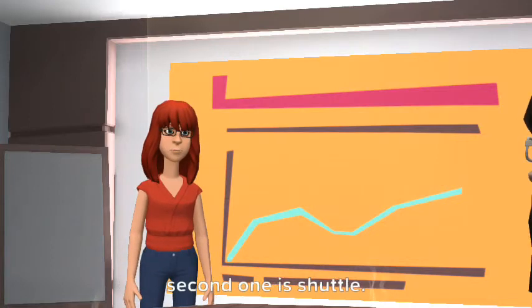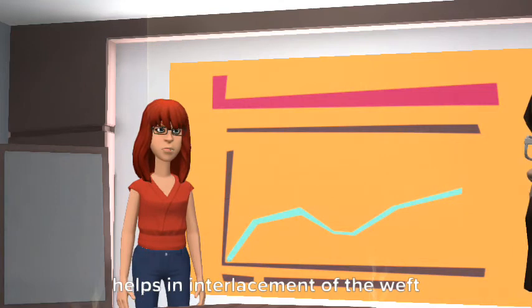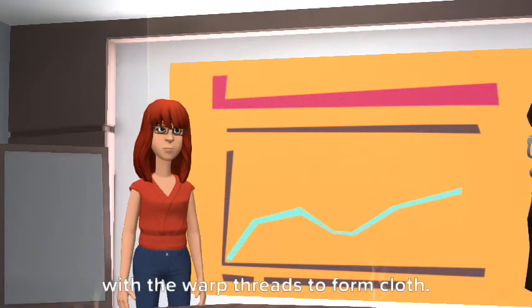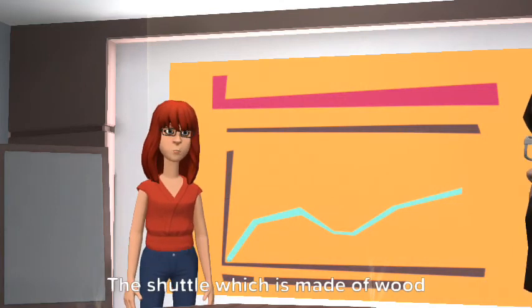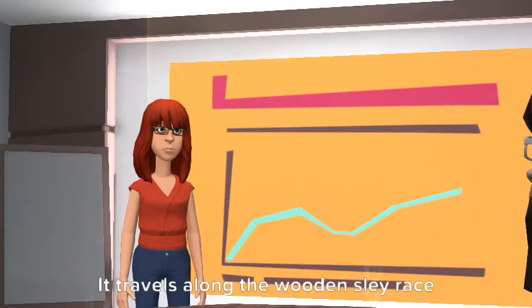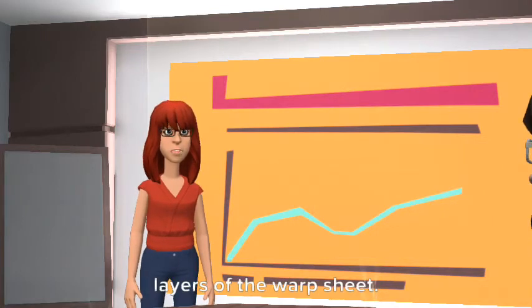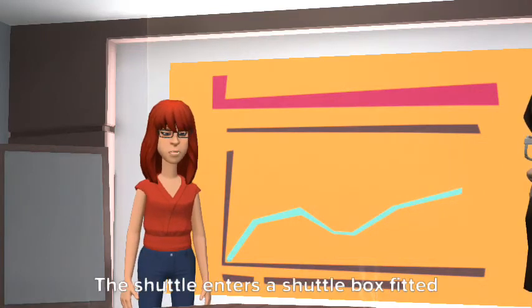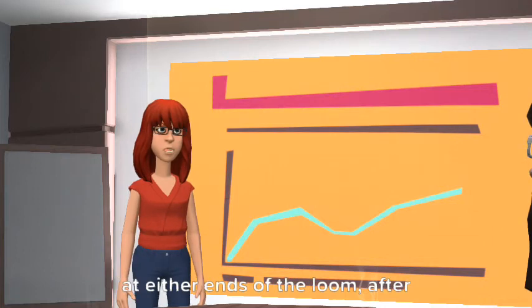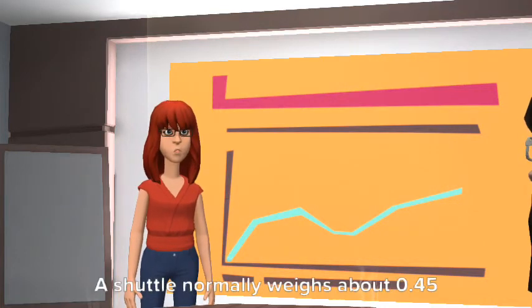Second one is shuttle. It is basically a weft carrier and helps in interlacement of the wefts with the warp threads to form cloth. The shuttle, which is made of wood, passes from one end of the loom to the other. It travels along the wooden slay race and passes between the top and bottom layers of the warp sheet. The shuttle enters a shuttle box fitted at either end of the loom after passing through the warp shed. A shuttle normally weighs about 0.45 kg.